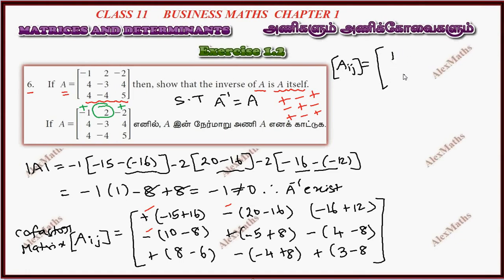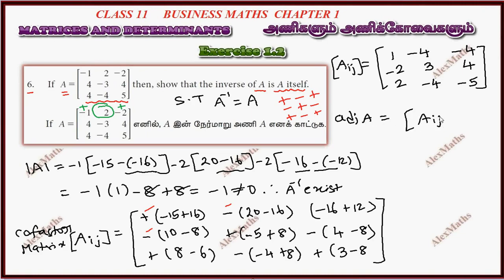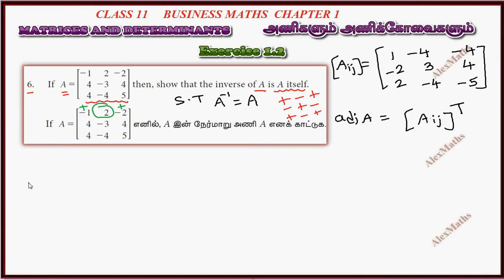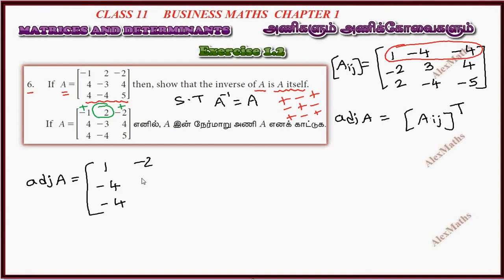So A sub i,j — the obtained matrix: first element is 1,1; root of minus 4; root of minus 2. Adjoint of A is the co-factor matrix transposed. Transpose — adjoint of A: 1st row, 1st column 1 to 4; 2nd row, 2nd column; 3rd row, 3rd column.